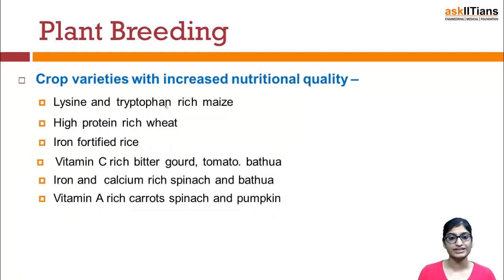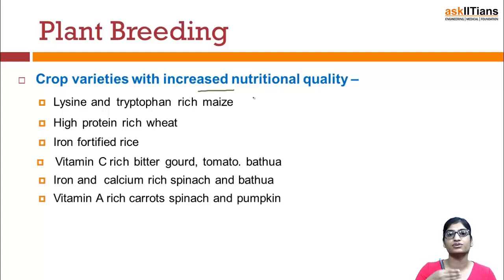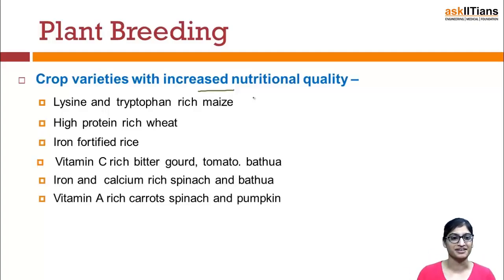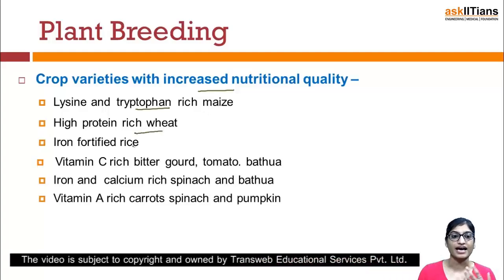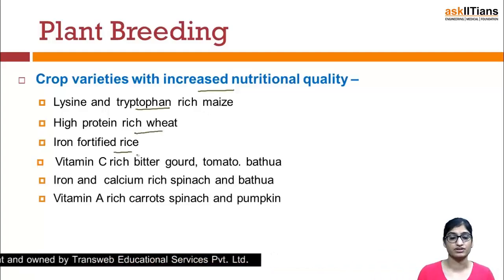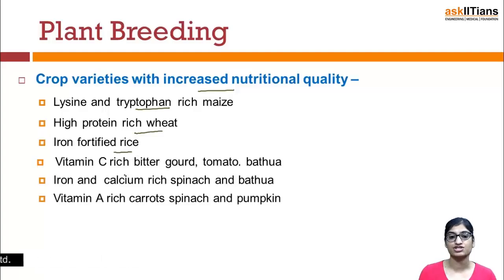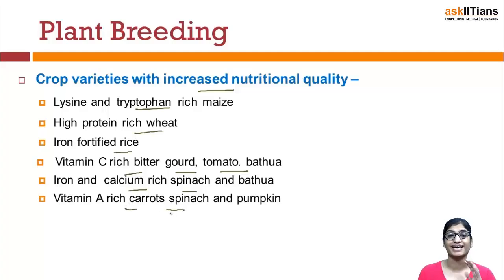Crop breeding manipulation has been done for increasing nutritional quality. This includes lysine-rich maize, high-protein-rich wheat, and iron-fortified rice enriched with iron. Vitamin C rich bitter gourd and tomato have been produced, as well as iron and calcium rich spinach.